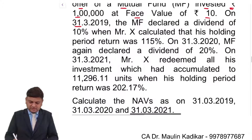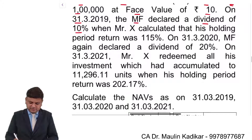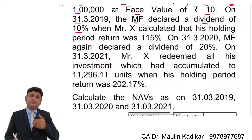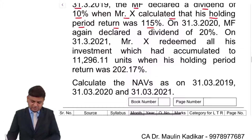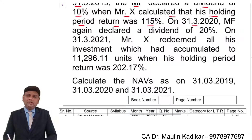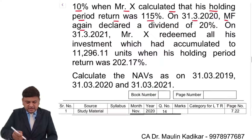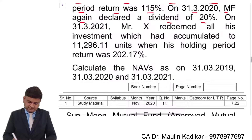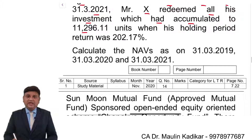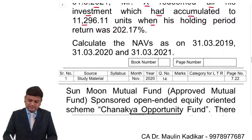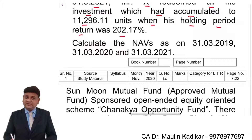On 31st of March 2019, the mutual fund declared a dividend of 10%. So 10,000 number of units into face value of 10 comes to 1 lakh, and 10% of that gives a dividend amount of Rs. 10,000. Mr. X calculated that his holding period return was 115%. On 31st of March 2020, the mutual fund again declared a dividend at the rate of 20%. On 31st of March 2021, Mr. X redeemed all his balance — the investment which had accumulated to 11,296.11 units — when his holding period return was 202.17%.